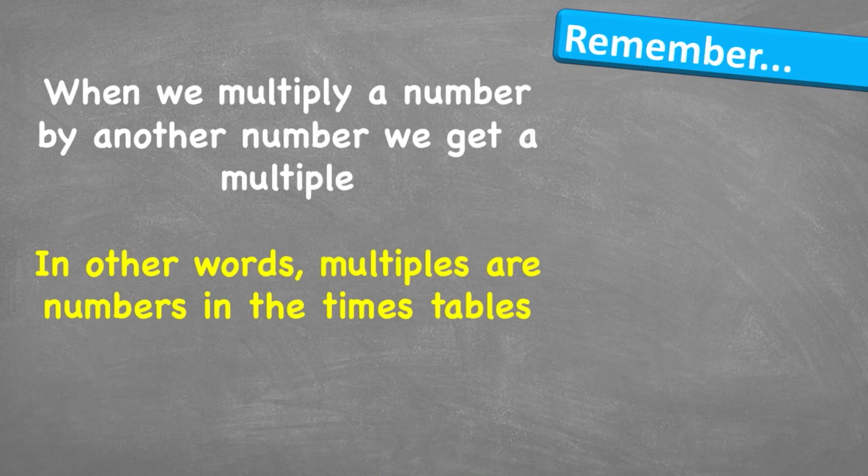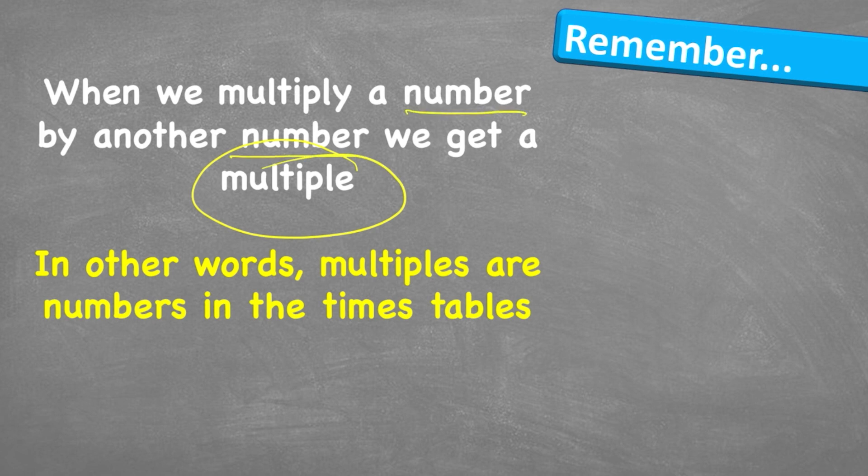Let's look at what to remember. When we multiply a number by another number, we get a multiple of both of those numbers. In other words, multiples are numbers in the times tables.